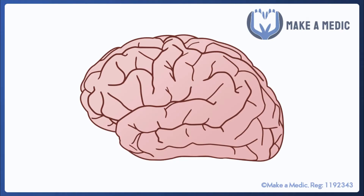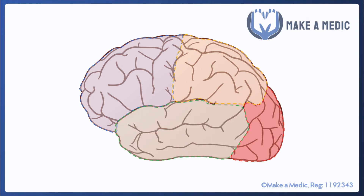So to begin with let's just focus on the basics of neuroanatomy. I'm just going to focus on the different lobes and also where the certain parts of the brain that are responsible for various functions are located. As we know, each cerebral hemisphere is split into four lobes: the frontal lobe, the parietal lobe, the occipital lobe, and the temporal lobe.